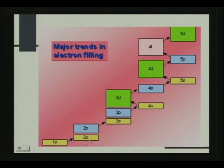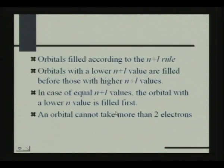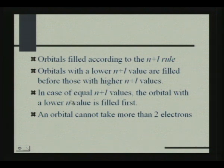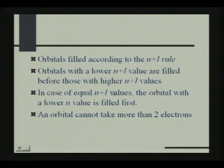A similar thing applies to 3p and 4s. Orbitals with a lower n+l value are filled before those with higher n+l values. In case of equal n+l values — such as 3p and 4s, or 4p and 5s — the orbital with the lower n value is filled first. I hope the n+l rule is clear.